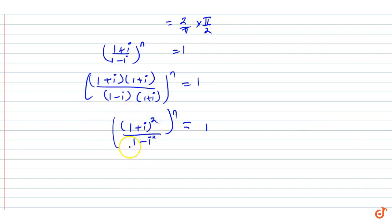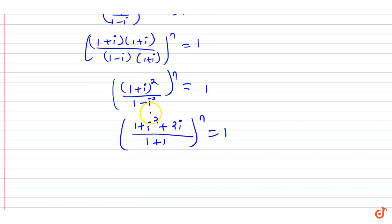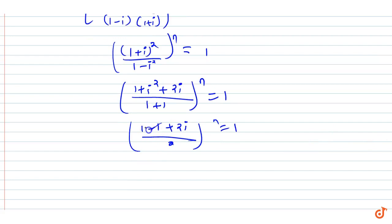Expanding: (1 + iota)² = 1 + 2iota + iota² = 1 + 2iota - 1 = 2iota. The denominator is 1 - iota² = 1 - (-1) = 2. So we get (2iota / 2) whole power n = 1, which simplifies to iota^n = 1.